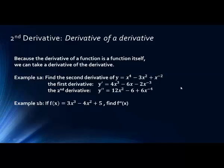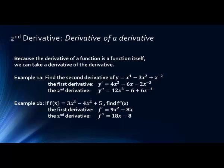So hit pause and try this yourself. Notice we are trying to find the second derivative again, which we denote by f prime prime. Again, the first derivative is pretty straightforward: 9x^2 - 8x. The second derivative is going to be 18x - 8.